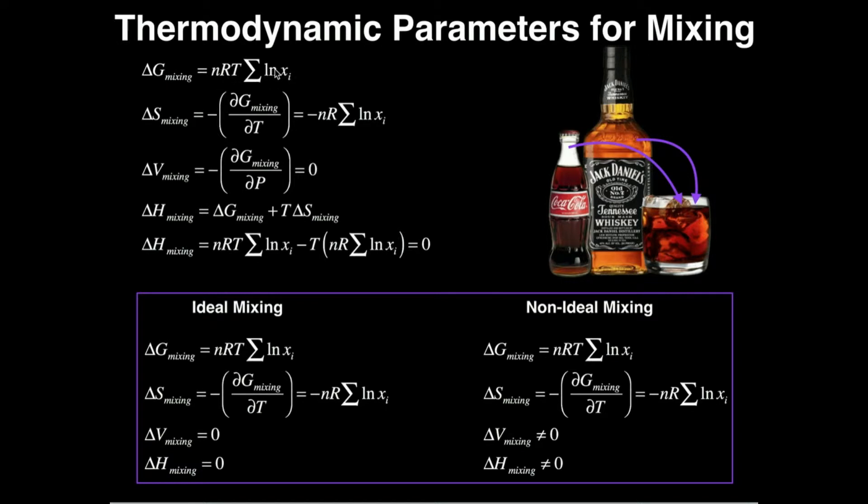Then we can calculate the entropy of mixing. What we do is take the expression for the Gibbs free energy and take its partial derivative with respect to temperature, and we have to throw a negative sign in front of here. What that means is we just take this expression right here and differentiate with respect to T, but we only have one term that's dependent on T—it's this T to the first power—so it's a simple power rule derivative and that results in the T just disappearing. So the entropy associated with mixing is equal to negative nR times this same sum of the natural log of the mole fractions that you have from the free energy.